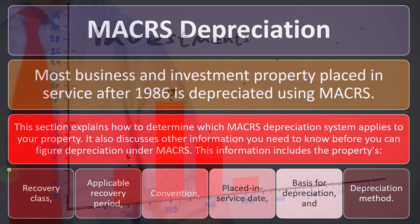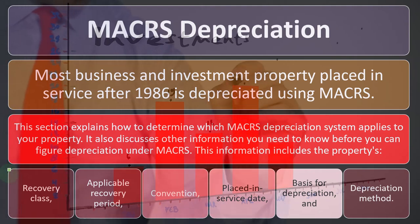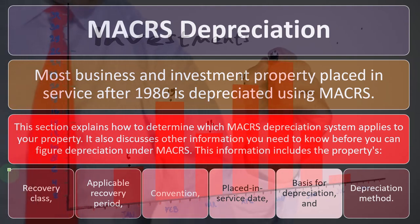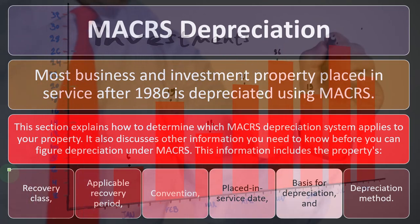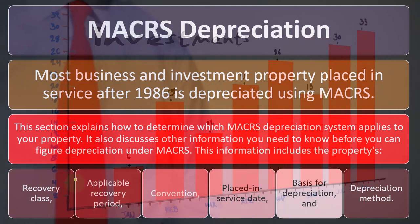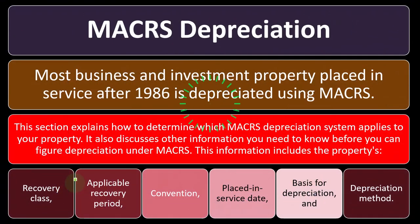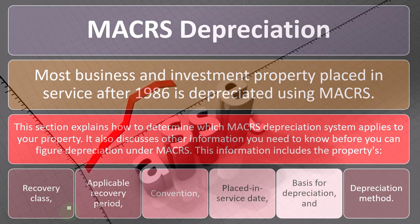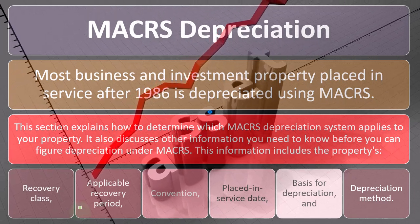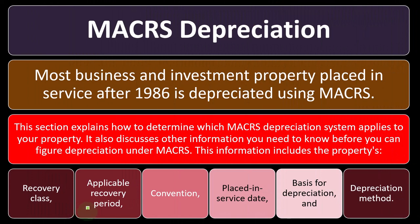Under GAAP, you would choose a depreciation method that reflects your financial statements as accurately as possible. In the tax code, the concept is similar but the rules are stricter. The applicable recovery period is basically the useful life — how long you'll depreciate or allocate the cost of the asset. It's typically dictated by the recovery class, and the tax code gives you limited options for what that recovery period will be.